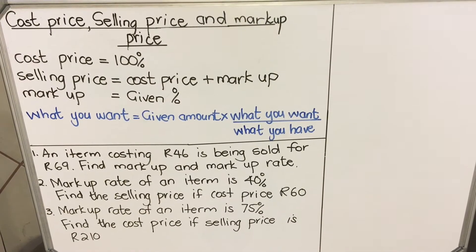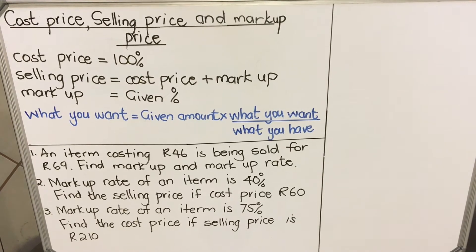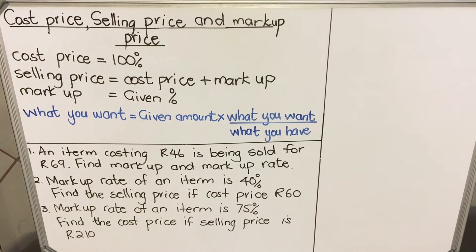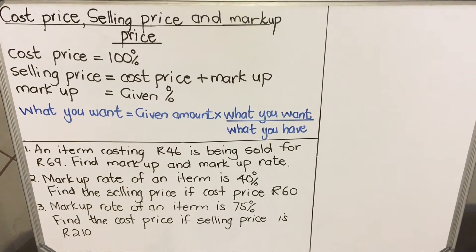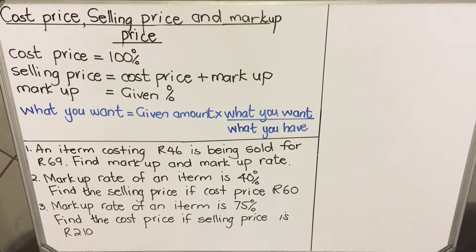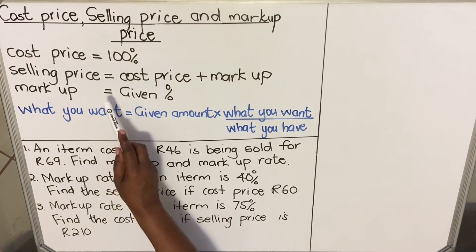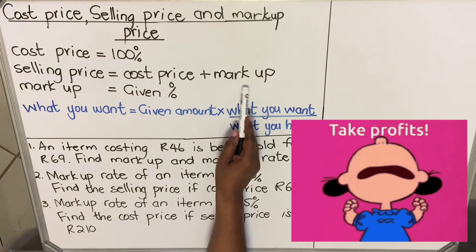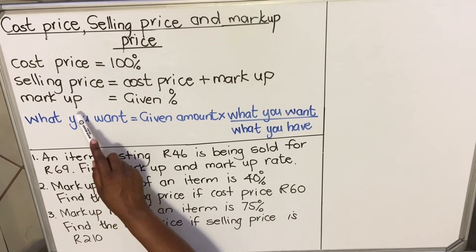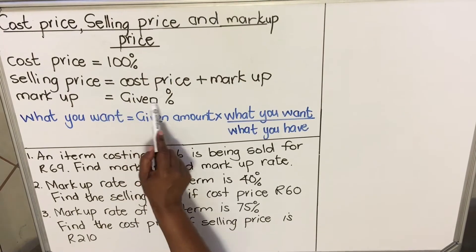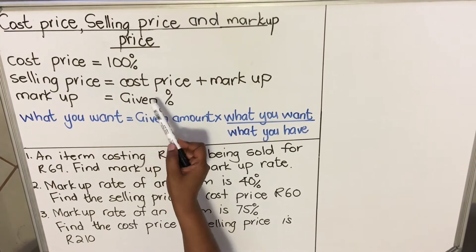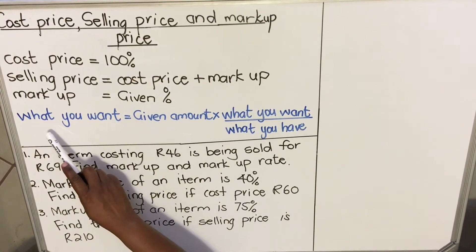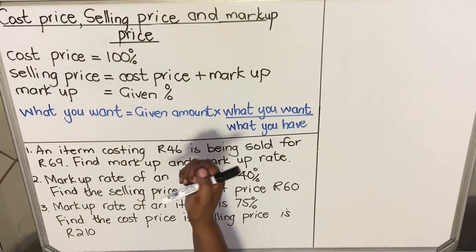Hello everyone, this is a video on cost price, selling price, and markup price. When you are given this kind of question and you are given a percentage, your cost price is always 100 percent. The selling price is equal to the cost price plus the markup price. The markup price is the profit. They'll give you a percentage for your markup price. This formula helps a lot if you are given percentages.